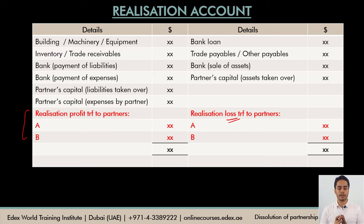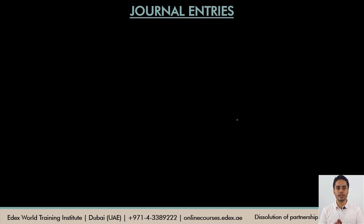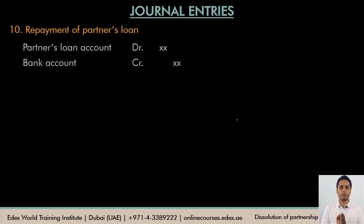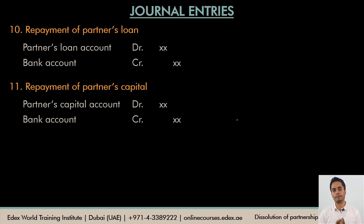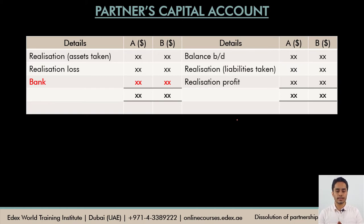This completes our realization account. Let's look at the final set of journal entries to complete our dissolution entries. The next step is to pay the firm's liabilities towards the partner, which is usually the partner's loan: debit the partner's loan and credit the bank account. Once the firm meets the liabilities towards the partner, the next step is to distribute whatever money remains in the bank account between the partners based on the balances in their capital accounts, so partner's capital account is debited and bank account is credited.